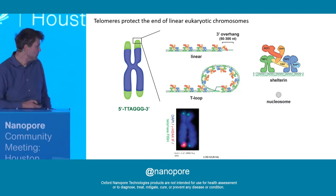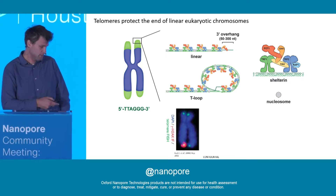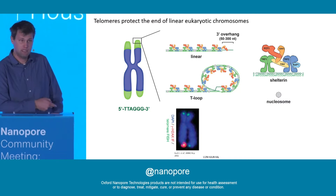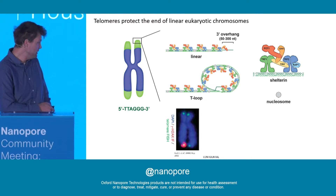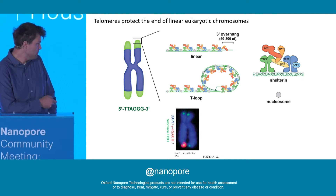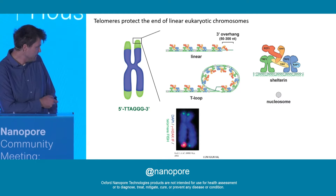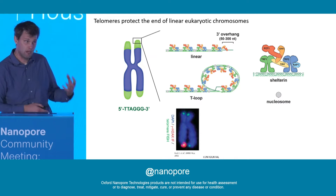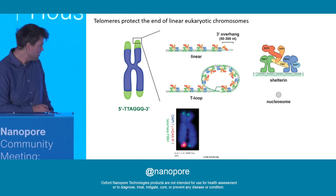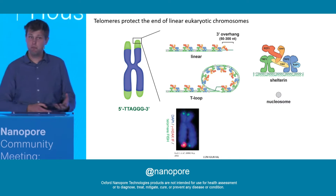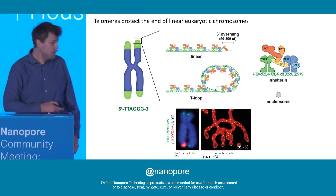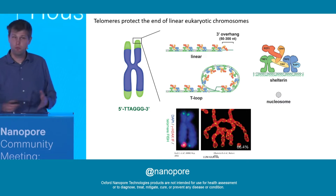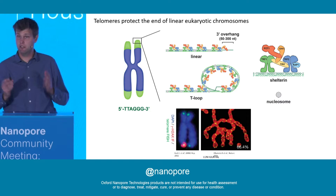That is important because if chromosome ends are marked by the DNA damage response — as seen in this metaphase image where telomeres are in green, DNA in blue, and gamma-H2AX is a marker for DNA damage — they get processed by the DNA repair machinery, resulting in chromosome-chromosome fusions and genome instability.